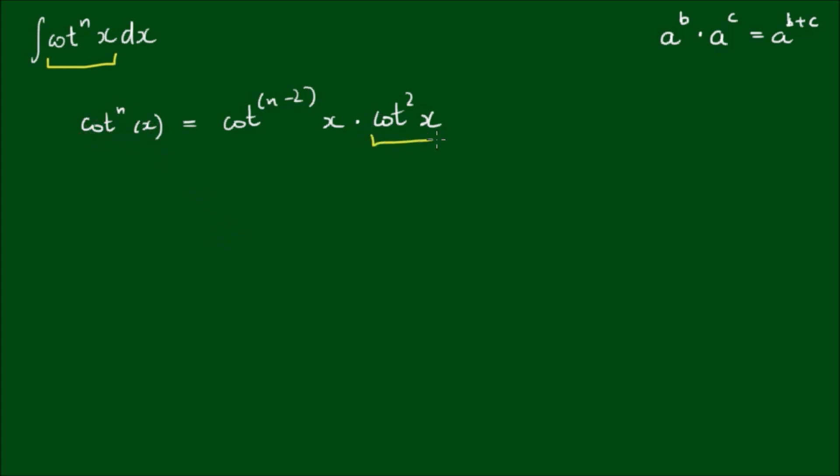Now by the Pythagorean identity, cot squared can be expressed as the cosecant squared of x minus 1. I'm going to put this in square brackets and copy down the cot to the n minus 2 power of x that we have at the front.